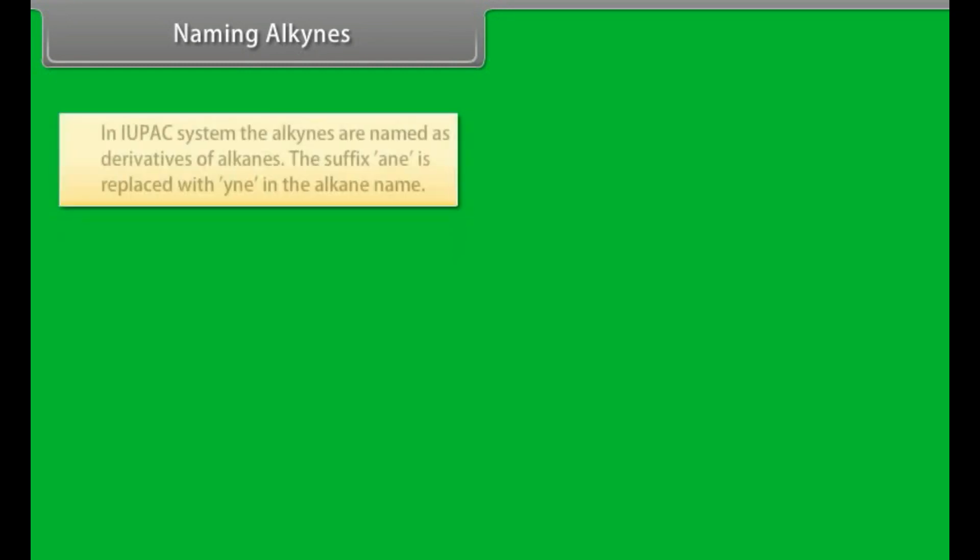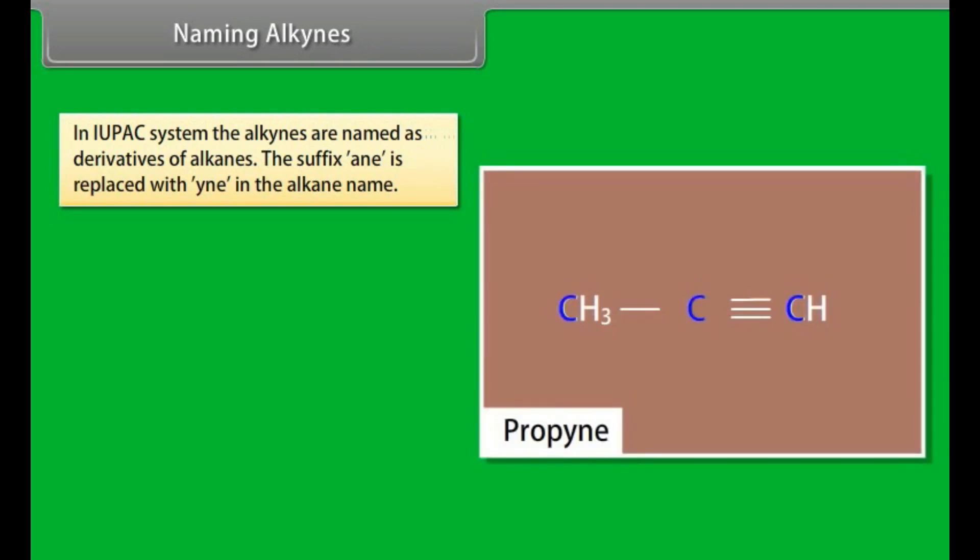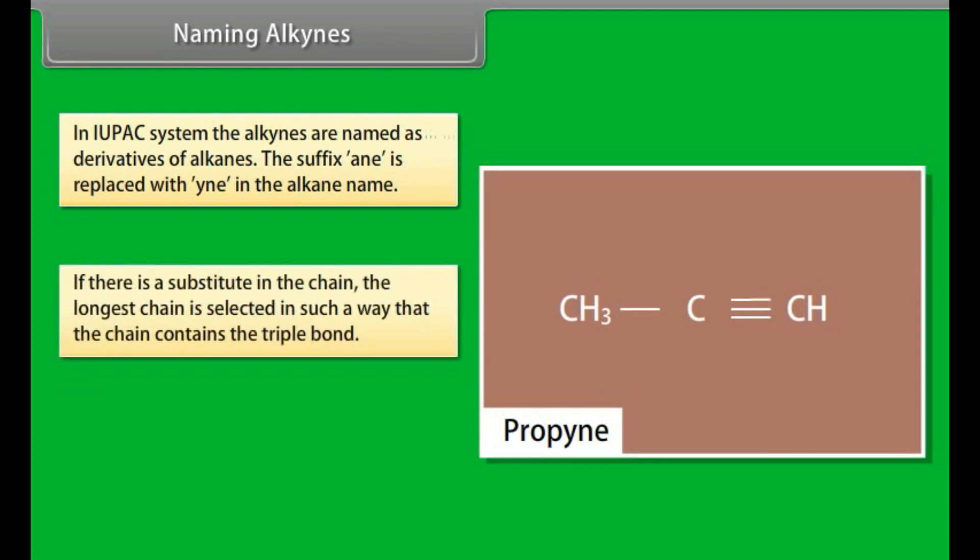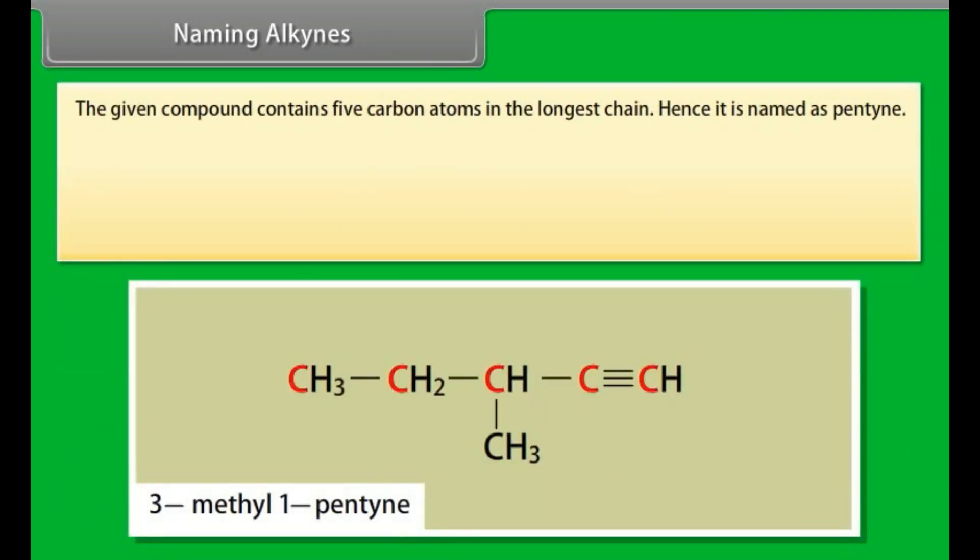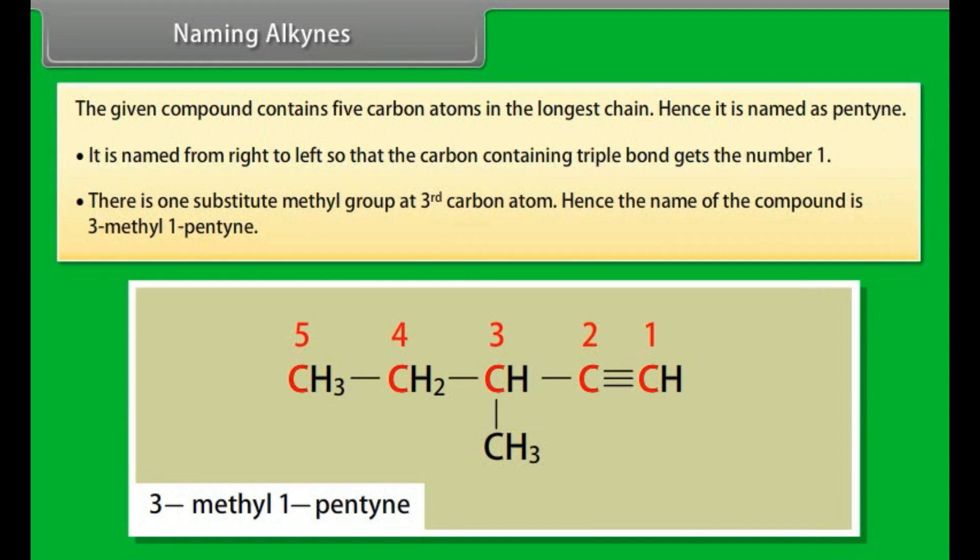Naming alkynes. In IUPAC system, the alkynes are named as derivatives of alkenes. The suffix -ane is replaced with -yne in the alkane name. For example, the given compound has three carbon atoms and hence the root name is propane. If the suffix -ane is replaced with -yne, we will get the IUPAC name of the compound as propyne. If there is a substituent in the chain, the longest chain is selected in such a way that the chain contains the triple bond. Similarly, the chain is numbered in such a way that the carbon containing the triple bond gets the least number. For example, the given compound contains five carbon atoms in the longest chain. Hence it is named as pentyne. It is named from the right to left so that the carbon containing triple bond gets the number one. There is one substituent, methyl group, at third carbon atom. Hence the name of the compound is 3-methyl-1-pentyne.